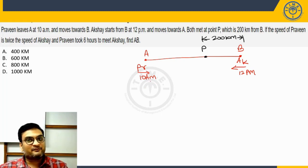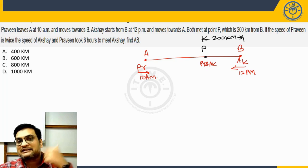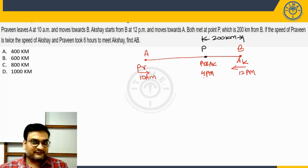If Praveen is taking 6 hours to meet, so basically Praveen and Akshay will be meeting here 6 hours after 10 AM. So that means they will be meeting at 4 PM. 6 hours after 10 AM means 4 PM.